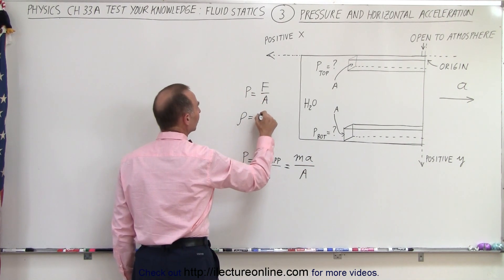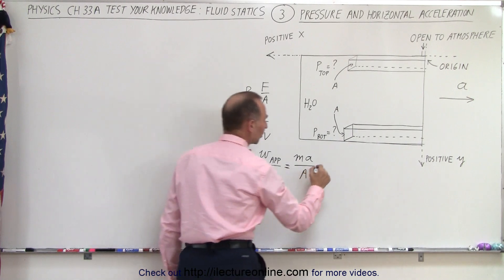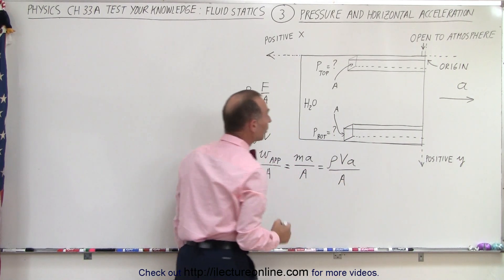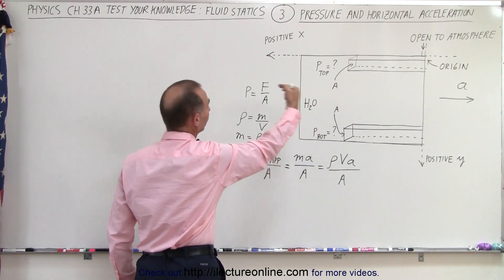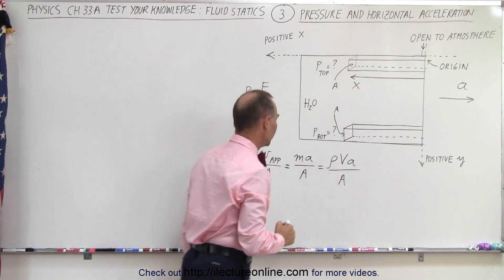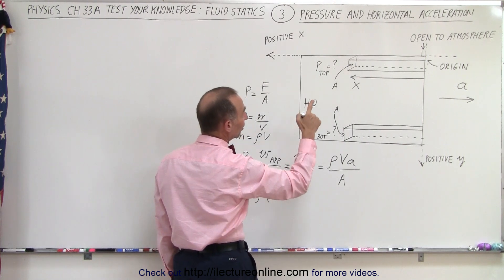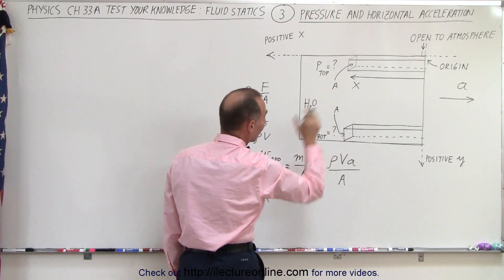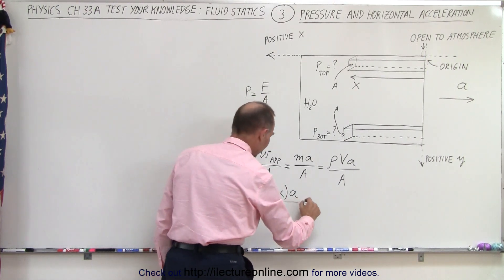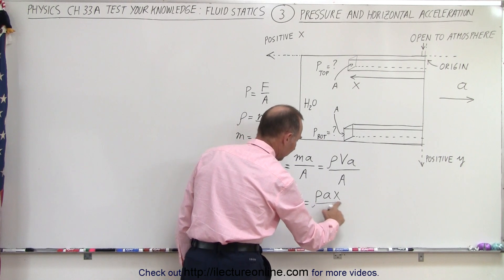We know that density equals mass divided by volume, which means mass equals density times volume. So we can replace the mass with the density of the liquid times the volume of that liquid, times the acceleration, all divided by A. In the horizontal direction, the positive x direction is to the left from the origin, meaning this area is at a distance x to the left from the origin. The volume is the area times the length of that rectangle, which is x, times A, all divided by A. The A's cancel out.